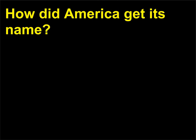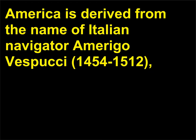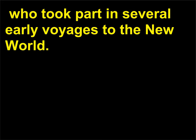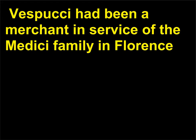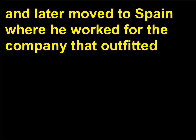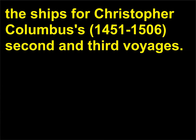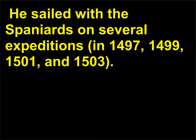How did America get its name? America is derived from the name of Italian navigator Amerigo Vespucci, 1454–1512, who took part in several early voyages to the New World. Vespucci had been a merchant in service of the Medici family in Florence, and later moved to Spain where he worked for the company that outfitted the ships for Christopher Columbus's, 1451–1506, second and third voyages. He sailed with the Spaniards on several expeditions, in 1497, 1499, 1501, and 1503.